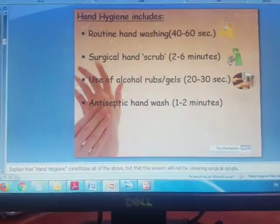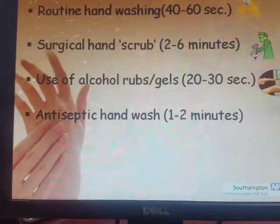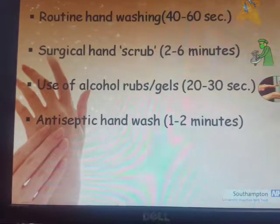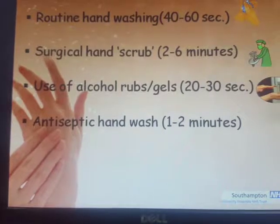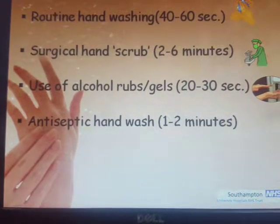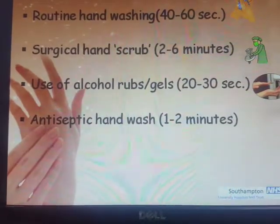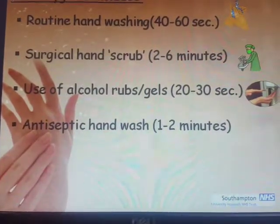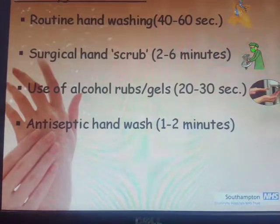The types of hand hygiene are: routine hand washing, 40 to 60 seconds — used in all departments. Surgical hand scrub, used in the operating theatre, done in the correct sequence with chlorhexidine brush, within 2 to 6 minutes. Use of alcohol rub, 20 to 30 seconds.